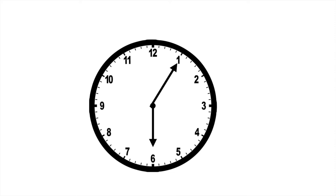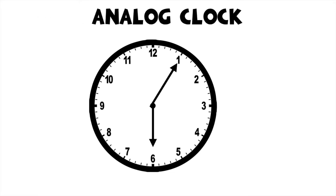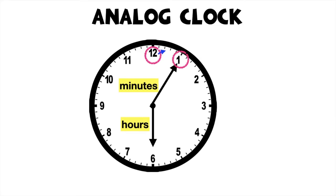Let's have the analog clock. Analog clocks use hands to show the hours and the minutes. The short hand tells the hours, while the long hand tells the minutes. In an analog clock, the time covered by the minute hand from one number to the next number is equivalent to 5 minutes.